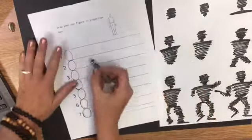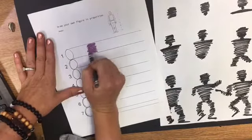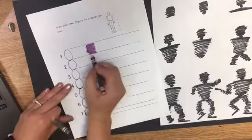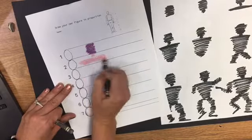We're going to do this first part together, but I'll just show you super quickly here. We're dividing our figure into seven or seven and a half heads like the video showed you.